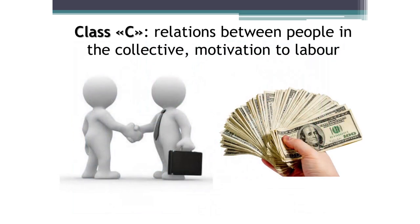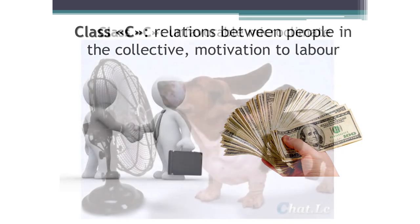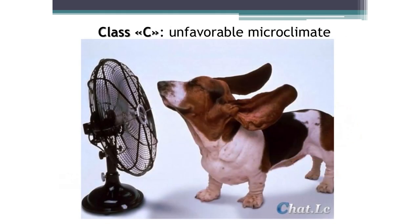Now about Class C — working conditions. A good relationship between people in a team and the presence of good motivation — preferably positive and internal — will increase performance and strengthen health. Working conditions also include indicators such as microclimate and illumination. If a person works in comfortable conditions, it increases efficiency and reduces the risk of many diseases.